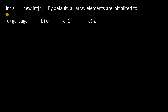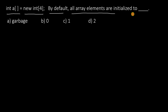Next: int A = new int[4]. Here we are declaring an array. By default, all array elements are initialized to 0.